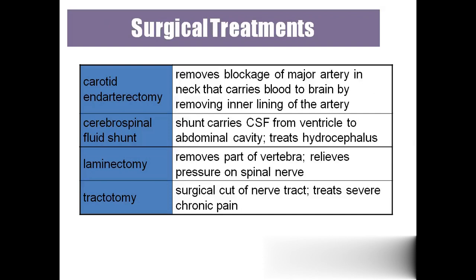'Carotid endarterectomy' — carotid arteries supply blood to the brain. If there is any blockage or blood clot in these arteries, they will remove that clot by removing the inner lining of the artery. 'Cerebrospinal fluid shunting' — if the person has hydrocephalus, they will shunt the CSF fluid to the abdominal cavity.